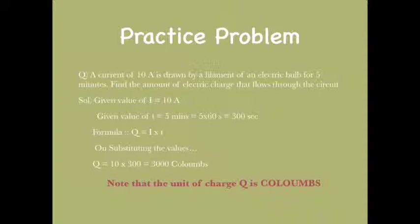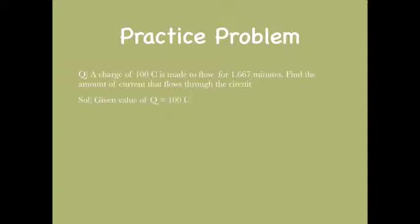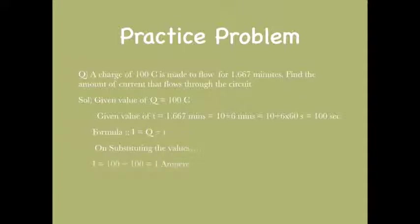Now let's solve the second problem. A charge of 100 coulombs is meant to flow for 1.667 minutes. Find the amount of current that flows through the circuit. The given value of Q is 100 coulombs, and t is 1.667 minutes, which is equivalent to 100 seconds. Using the formula I equals Q divided by t, substituting the values gives I equals 100 divided by 100, which equals 1 ampere. Always remember to convert time into seconds.